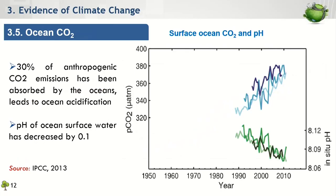In addition to the changes discussed earlier, changes in ocean CO2 and pH were also identified. About 30% of anthropogenic CO2 emissions have been absorbed by the ocean. As the amount of atmospheric CO2 has increased, its concentration in the ocean also increased, leading to ocean acidification. As shown in this figure, the pH level of ocean surface water has decreased since the late 1980s, and according to the IPCC, ocean surface water pH has decreased by about 0.1 since the beginning of the industrial era.